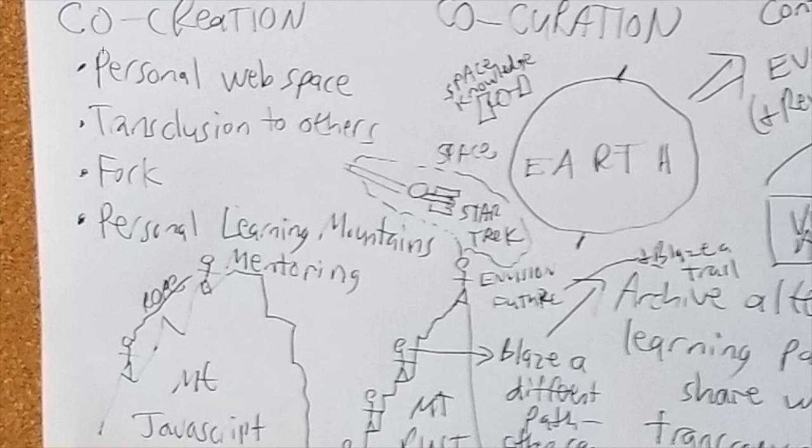Okay, but let's see what else. Co-creation. Okay, so you have a personal web space. Transclusion to others information. And you can fork. And essentially you're building your own personal learning mountains. So I like to think of education like mountains. Mount JavaScript, Mount Rust, or whatever mountain. Because it seems like whenever something new comes out you have to read a thousand pages before you can do anything.